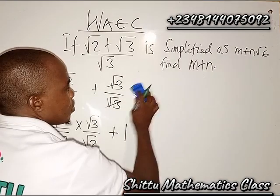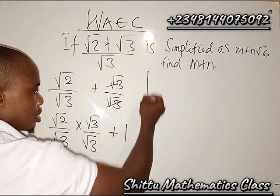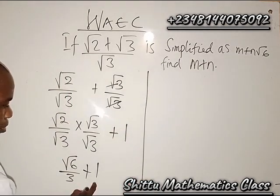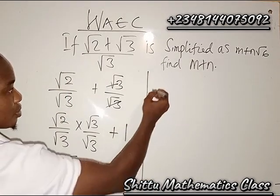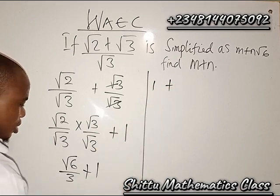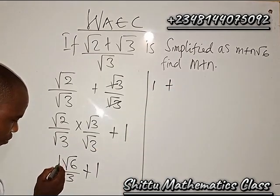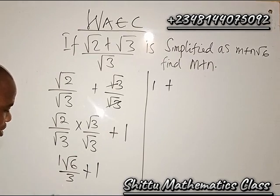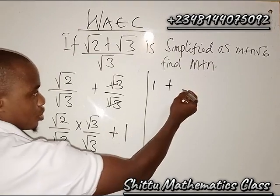So now we can see that here we can write this as 1 plus, then we can say we have 1 here it's invisible right, so I'm going to bring it out, I'm going to be 1 over 3 root 6.